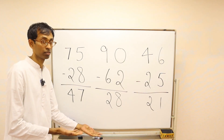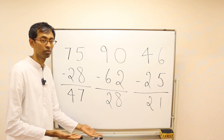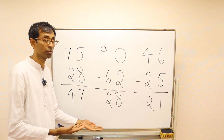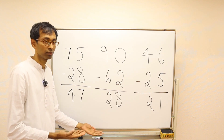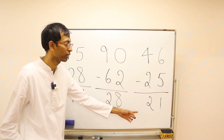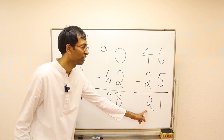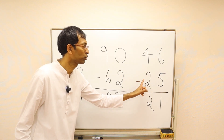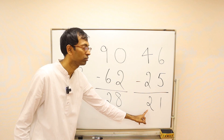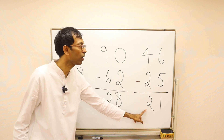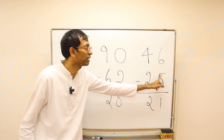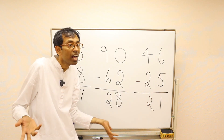Here are the answers — did you get them right? Here you can see: 4 minus 2, we put down a 2 because those digits don't need any help.